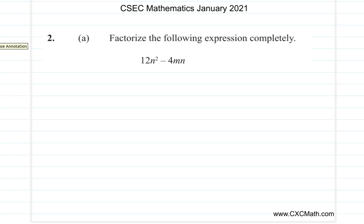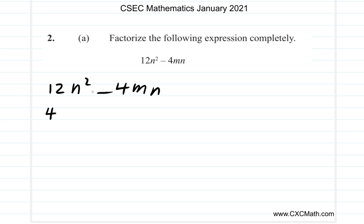Alright, you're finished. What did you get? Let's see what happens here. You have 12n squared minus 4mn. What can divide into 12 and also 4? In other words, you want a factor of 12 which is also a factor of 4. You want the HCF — highest common factor — of 12 and 4. What is that? Well, that's 4. Then, in terms of the letters, you have n as a common factor.